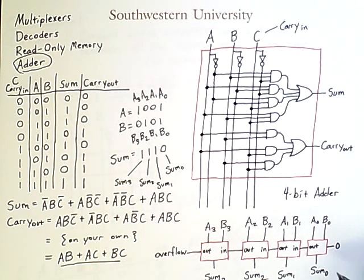So by stringing together four adders, I can add two four-bit numbers, these separate bits that come out or combined to be my final result.